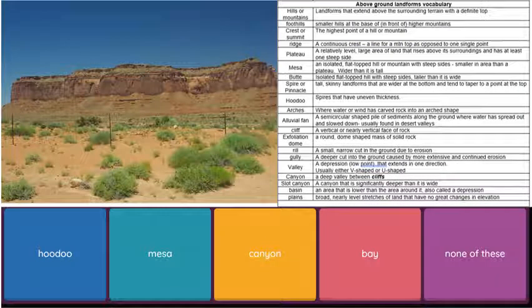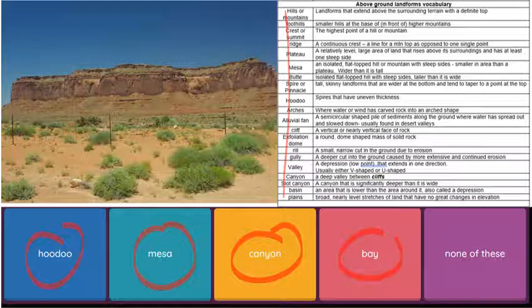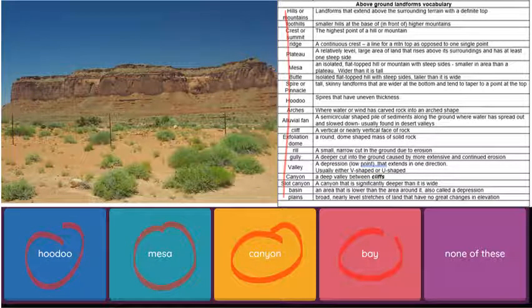Look at the landform. You can obviously see that this is an above ground landform, so your answer is certainly going to be in that list. What you have to do is read the definitions, find the words on the list, and see which one matches or describes what you see in the picture and choose that as your answer.